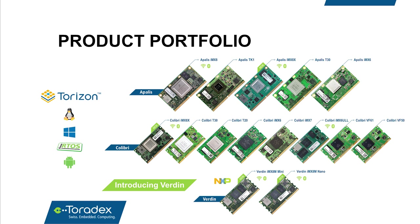Toradex has a wide product portfolio divided into three families: the Apalis, the Colibri, and the Verdin family. I would like to highlight Verdin because it is brand new — it was released at Embedded World this year, a few months ago. The first Verdin module is equipped with the NXP i.MX8M Mini processor, and Verdin has the interfaces that Toradex believes are the future of embedded systems, so they are modern.